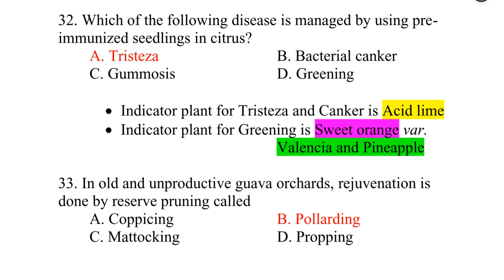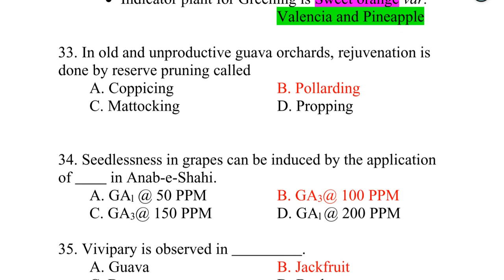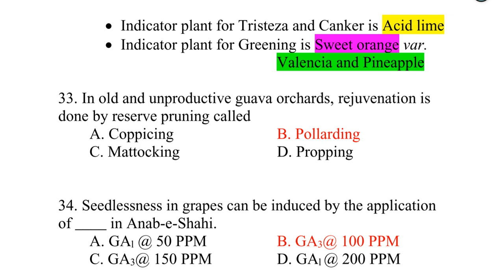In old and unproductive Guava orchards, regeneration is done by a reserve pruning called pulading. Seedlessness in grapes can be induced by the application of GA3 at 100 ppm in the Anab-e-Shahi variety — option B.